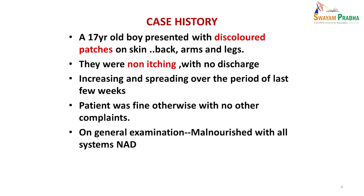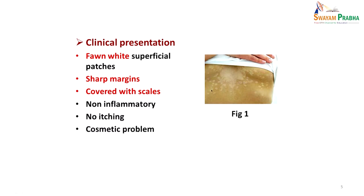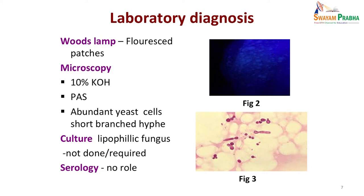The patient was fine otherwise with no other complaints, and on general examination it was noticed the patient was malnourished with all other systems normal. On examination, there were fawn-white superficial patches seen on the back and other areas of the skin with sharp margins, and when you rub them with a slide or by hand you will see dry white scales coming out. When we exposed this area of the skin to a UV Wood's lamp, fluorescent patches appeared — these patches fluoresce.